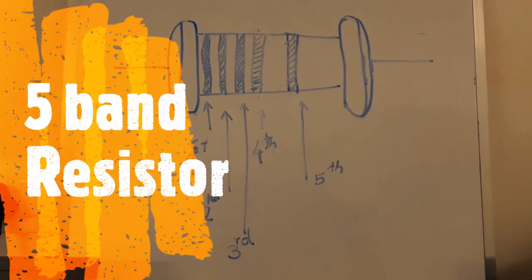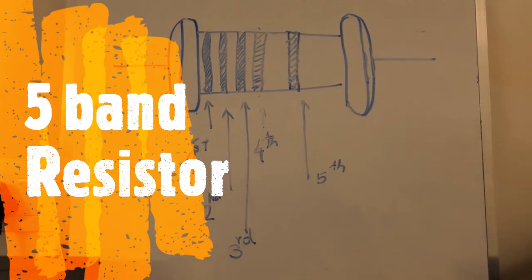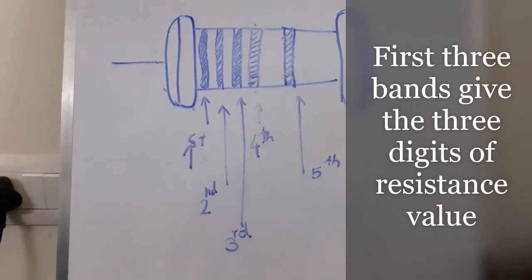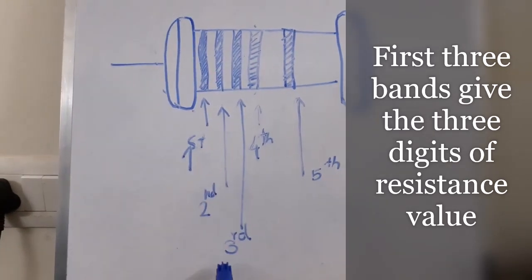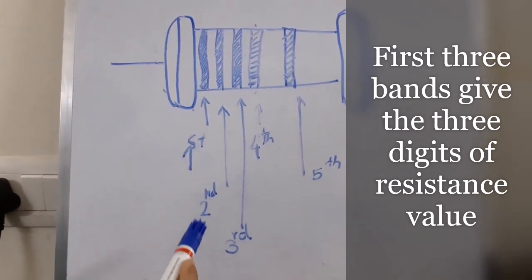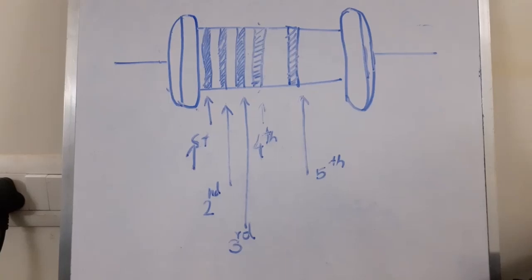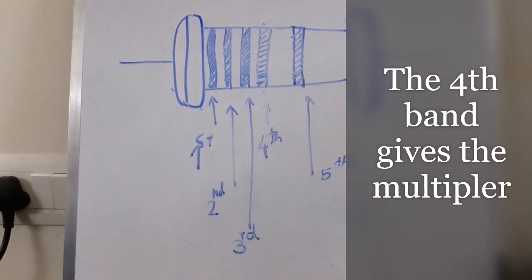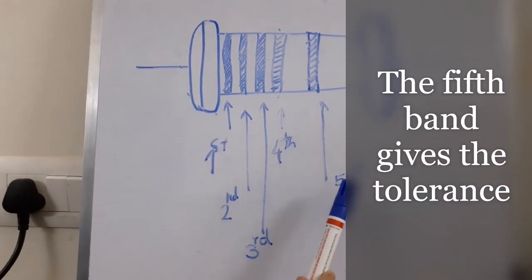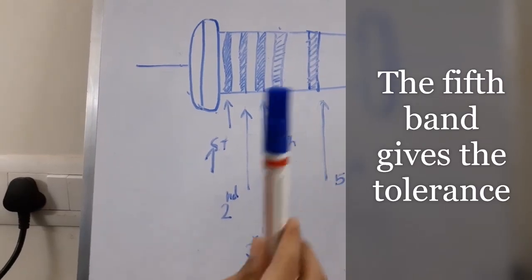Now let us understand a five band resistor. In this case, the first three color bands denote the digits of the resistance value, and the fourth band is the multiplier. The fifth and last band denotes the tolerance.